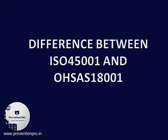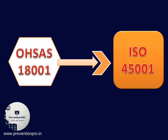Good day to all. Today we are going to discuss the difference between ISO 45001 and OHSAS 18001. Since its first publication in 1999, OHSAS 18001 has been a recognized occupational health and safety management system standard against which management systems can be assessed and certified.